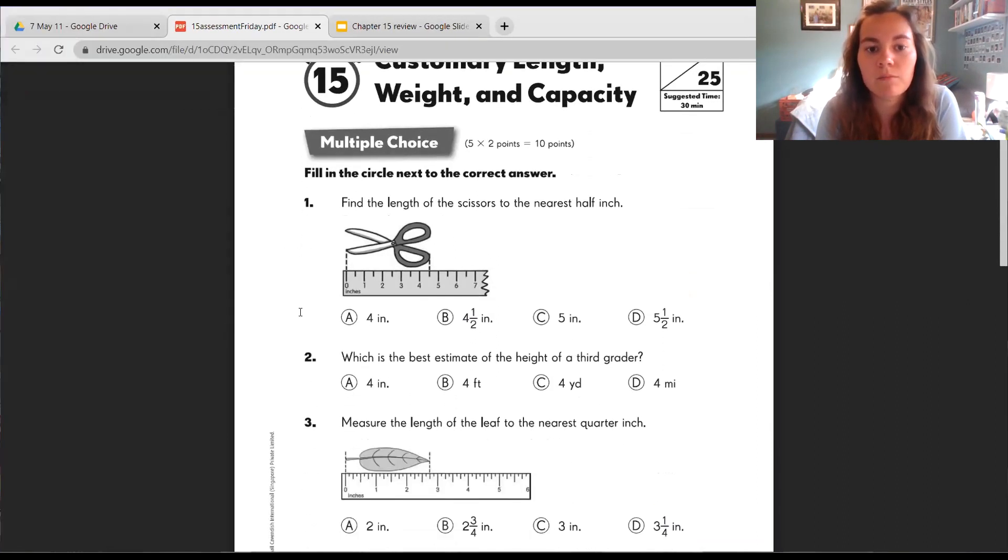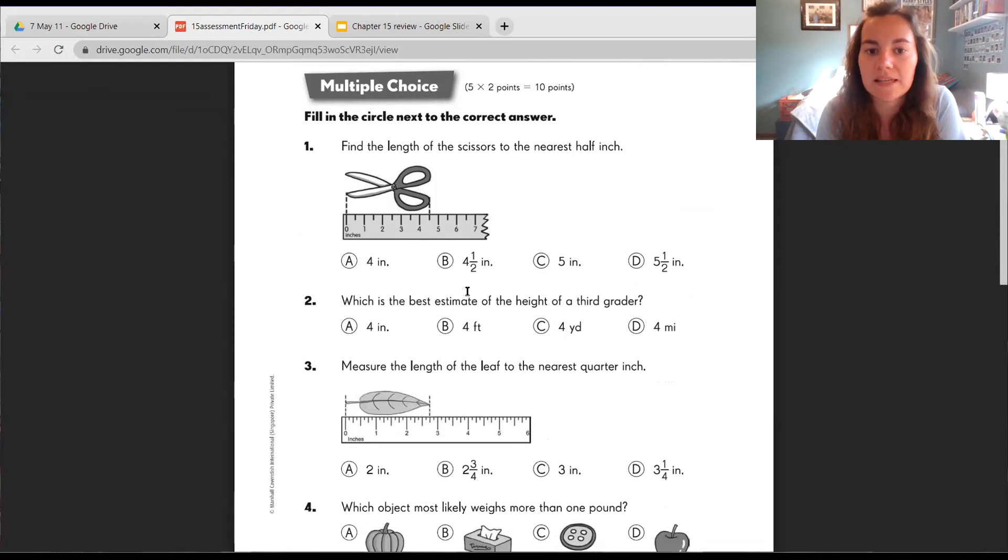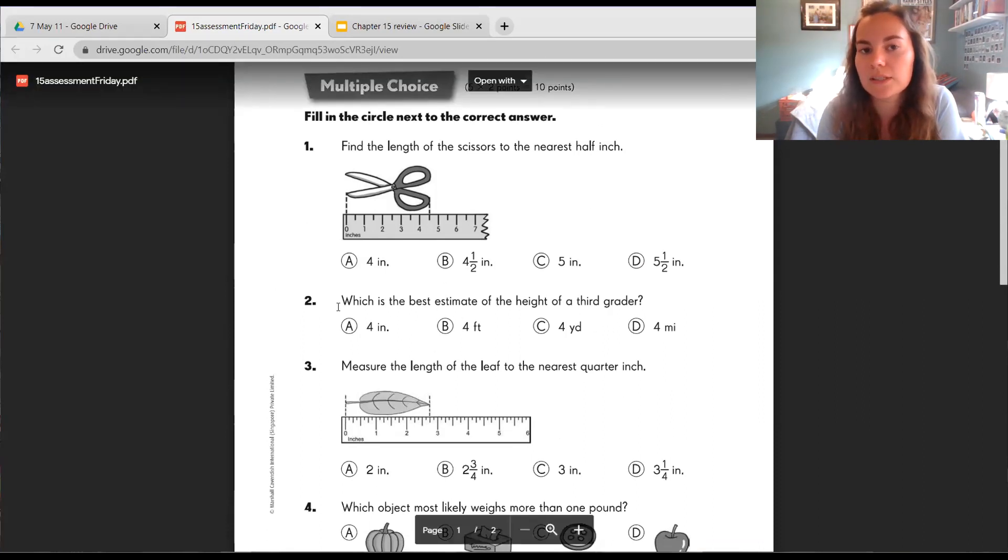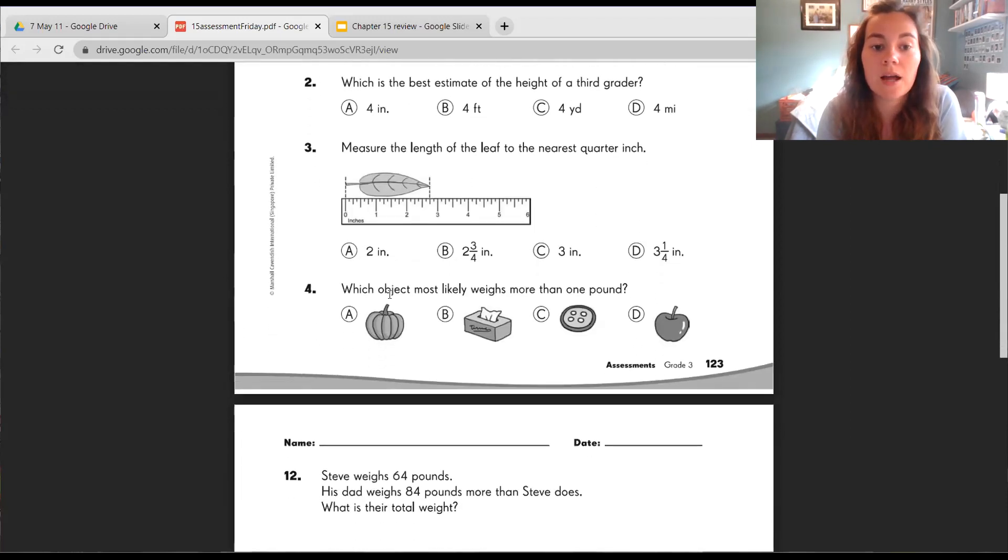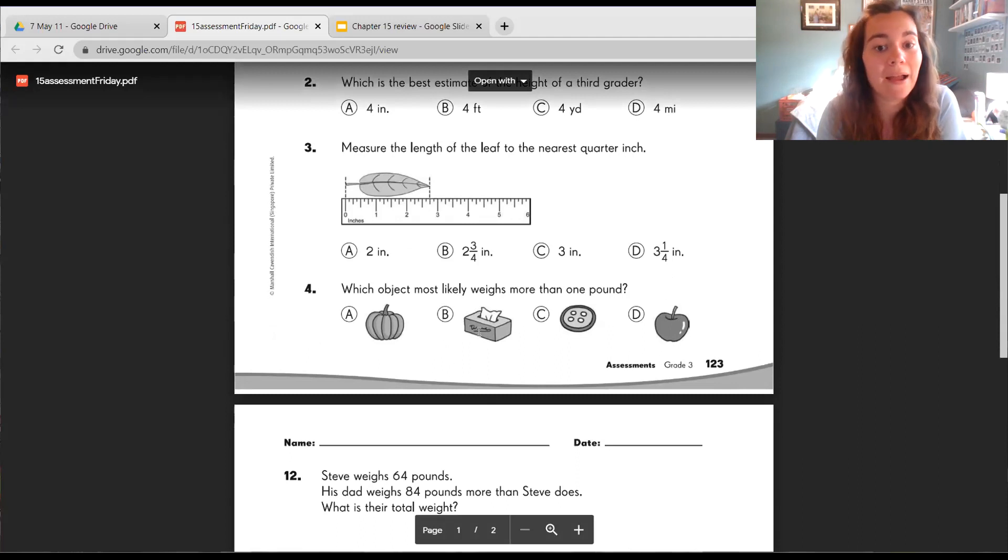So we have some multiple choice answers. Find the length of the scissors to the nearest half inch. What is the best estimate of the height of a third grader? So you have to think about what unit would be best. Measuring the length of a leaf. What objects weigh more than one pound?